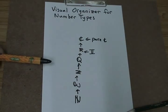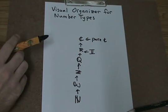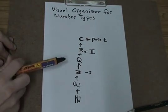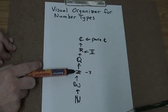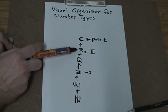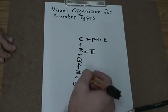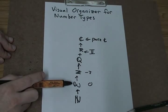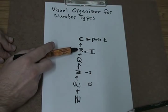We can use these flow mappings to describe what kind of number something is. For the number negative three, the smallest group it belongs to is integers — which means it's also rational, real, and complex. For the number zero, the smallest group it belongs to is whole numbers, which means zero is also an integer, rational, real, and complex.